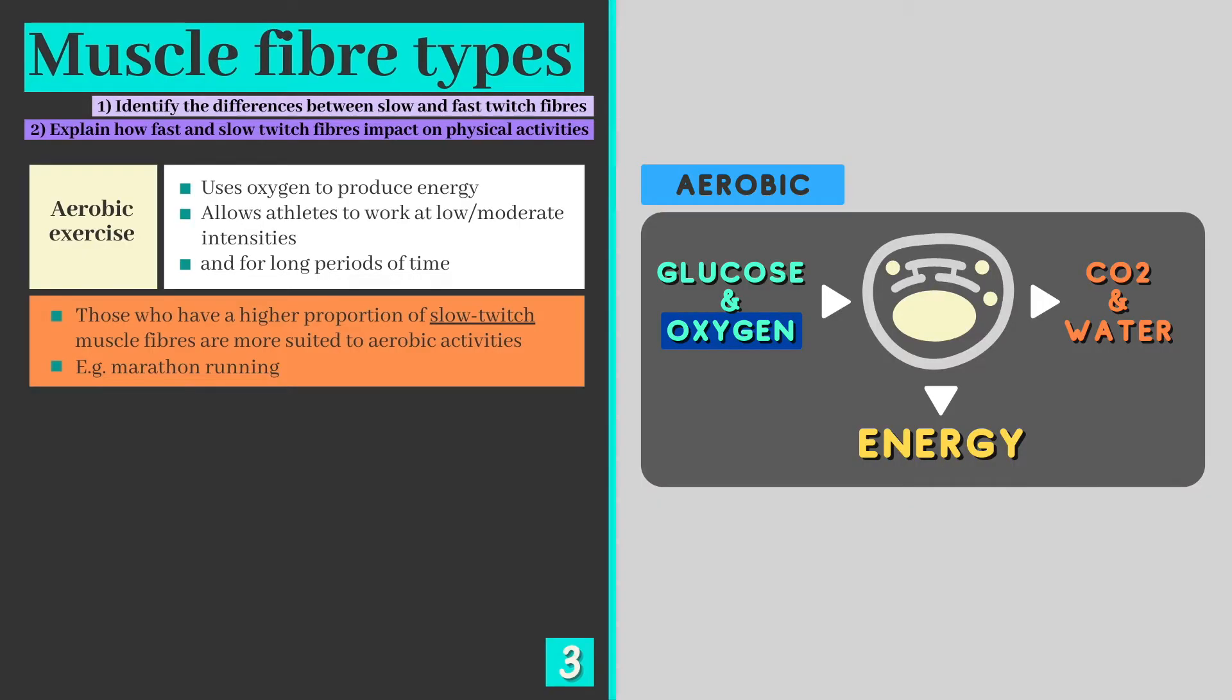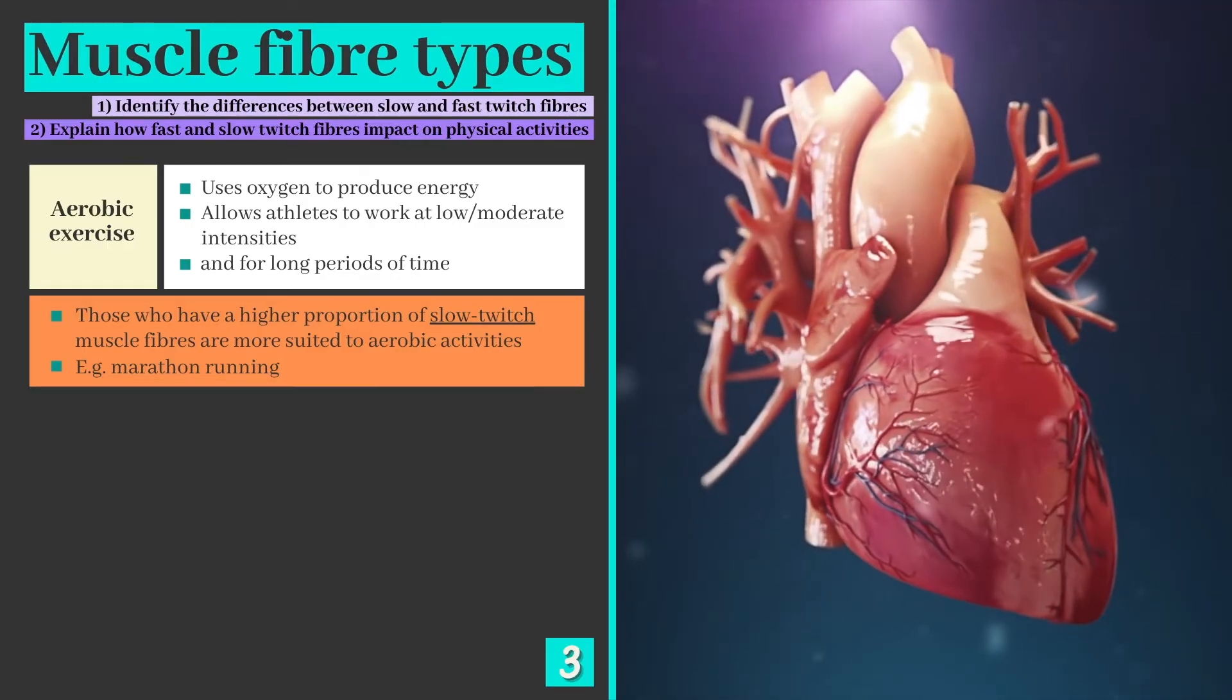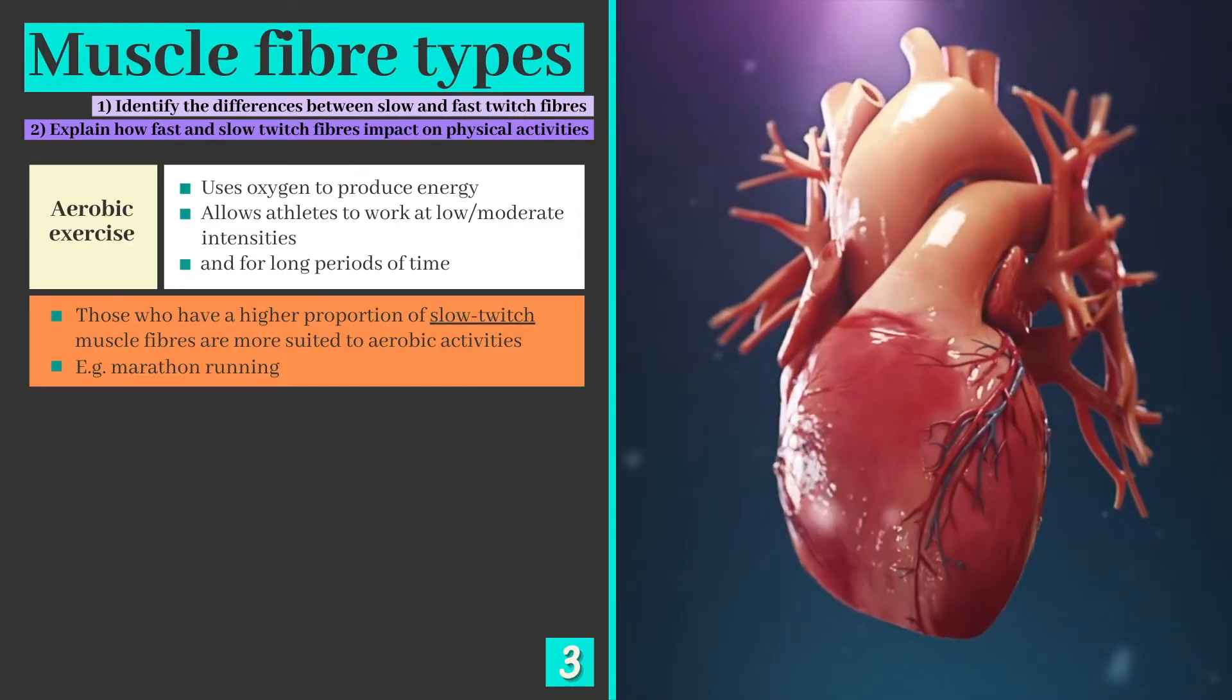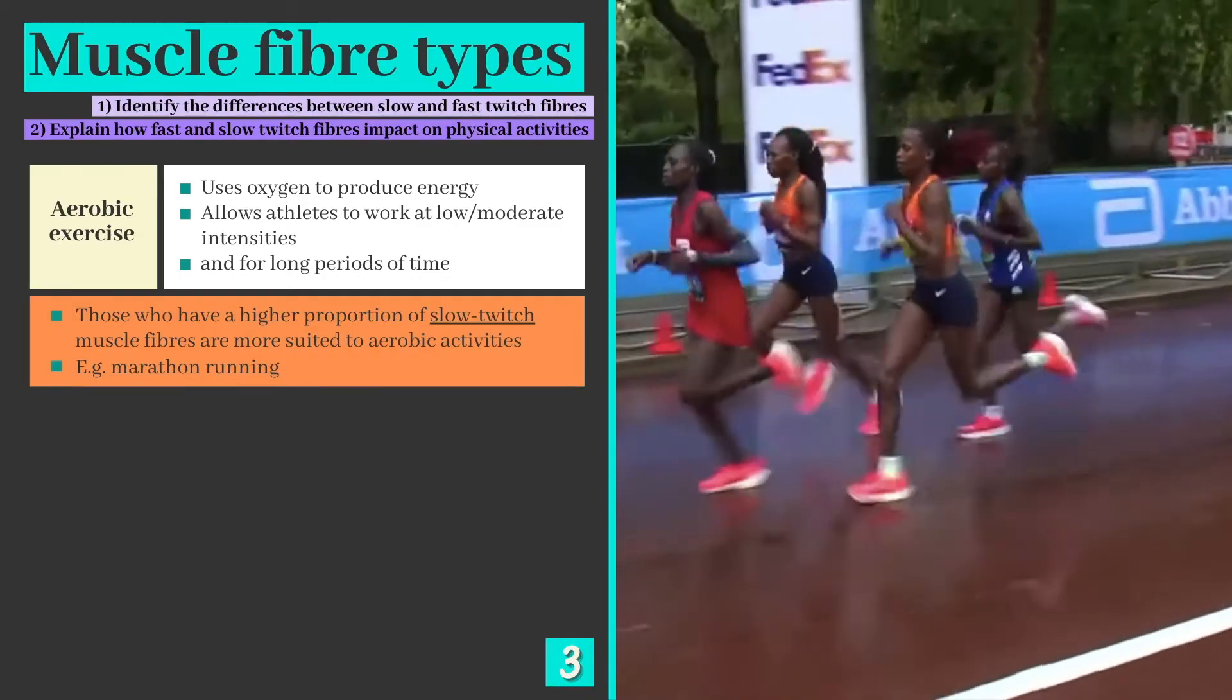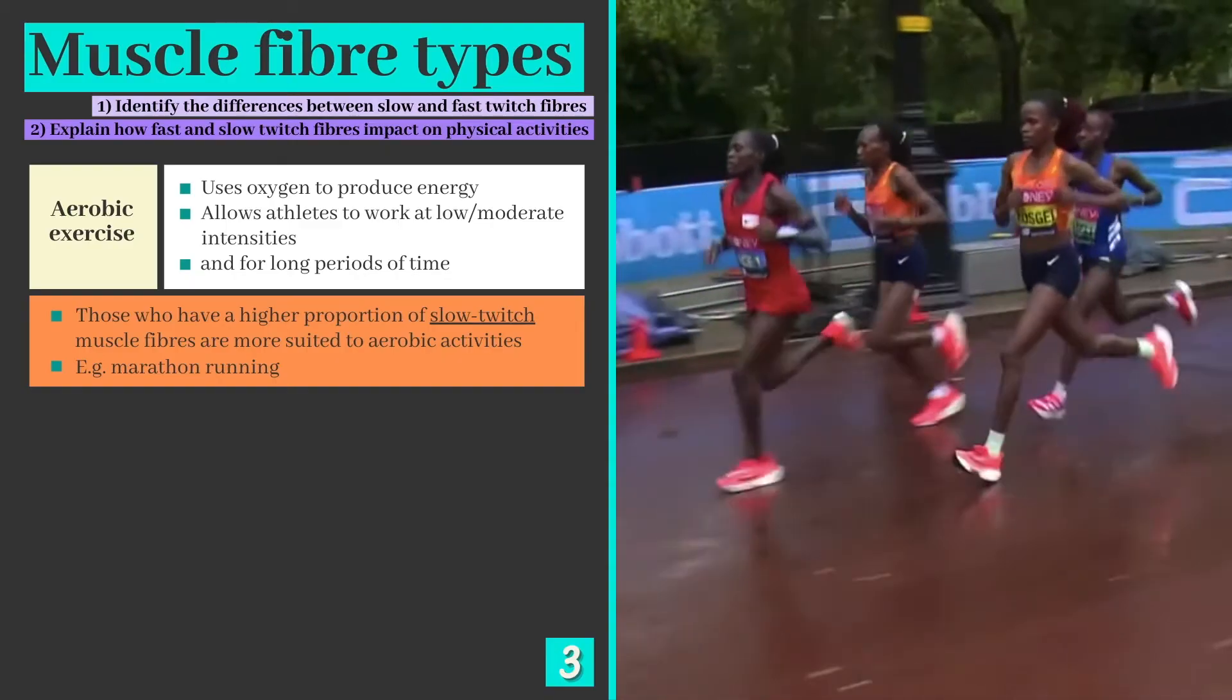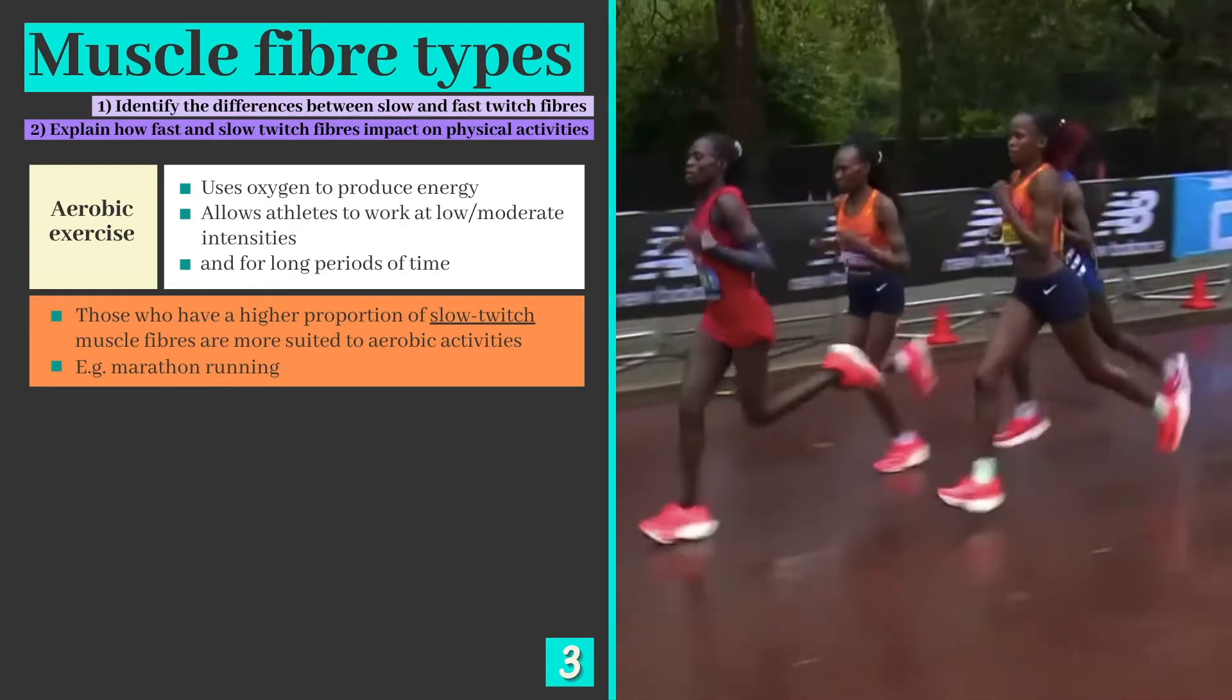Aerobic exercise relies on oxygen to produce energy. Your heart rate and breathing rate increase to supply oxygen to the working muscles, allowing athletes to continue performing at low to moderate intensities over long periods of time. Aerobic exercise is therefore associated with slow twitch muscle fibers, and those who naturally have a high proportion of these fibers are more suited to endurance activities such as marathon running.